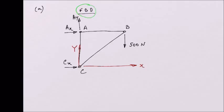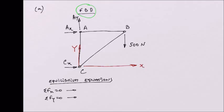What we need to do now is use the equilibrium equations for this free body diagram. We are going to say: summation of forces in the x-direction equals zero; summation of forces in the y-direction equals zero; and summation of moments about point A equals zero. From these three equilibrium equations, we will be able to calculate the reactions AX, AY, and CX.